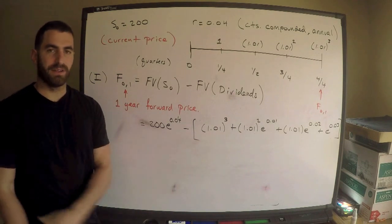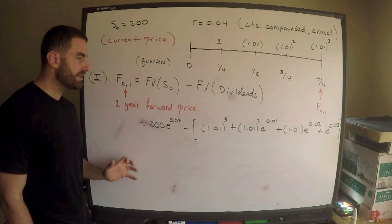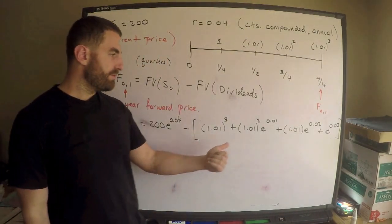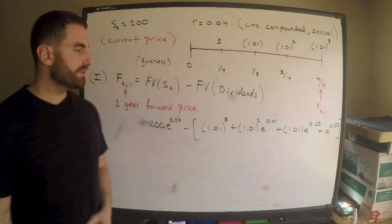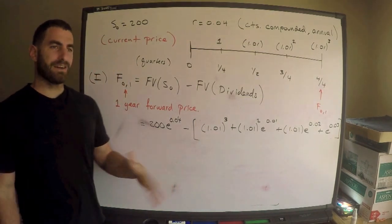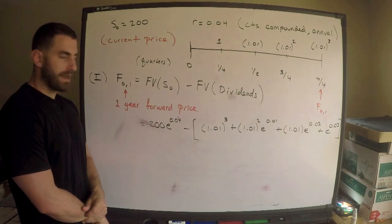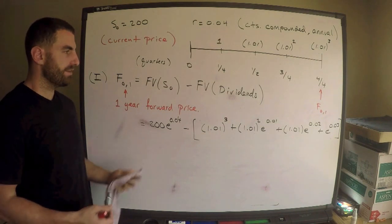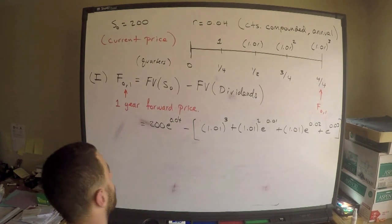If the original question had more discrete dividend payments, you'd need to compute this as a finite geometric sum — find the common ratio, first term, and evaluate. In this simplified version though, you can just compute it directly on the calculator. What you should get is 204.04.